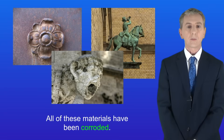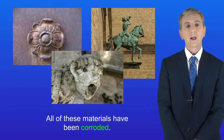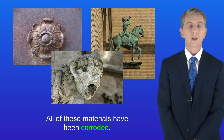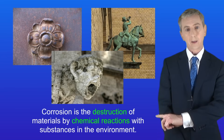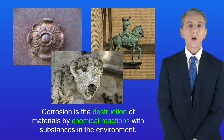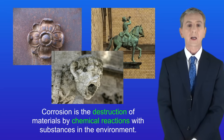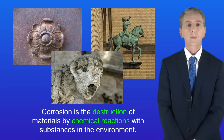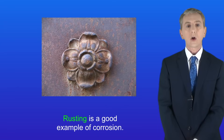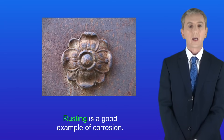I'm showing you three different materials here and in each case you can see that the materials have been corroded. We're going to start by looking at the definition of corrosion. Corrosion is the destruction of materials by chemical reactions with substances in the environment. A good example of corrosion is rusting.